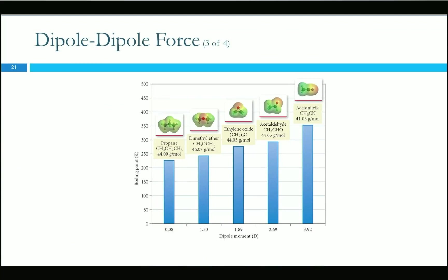Dipole-dipole forces are not all equal — we can have stronger or weaker dipole moments, meaning the difference from one side of the molecule to the other, measured by the difference in electronegativity. A dipole moment of 0.08 is basically nothing, as in propane. As we increase the dipole moment to stronger and stronger dipole-dipole forces, the boiling point increases, all the way up to acetonitrile.